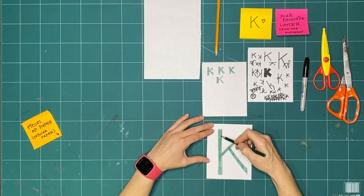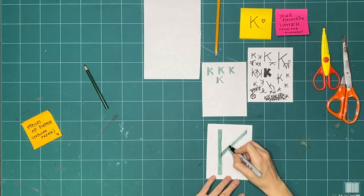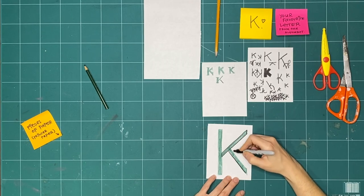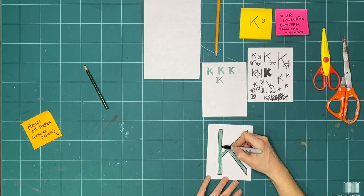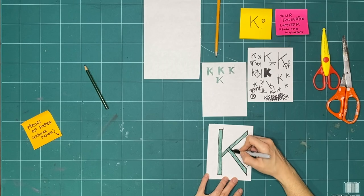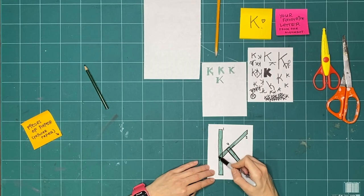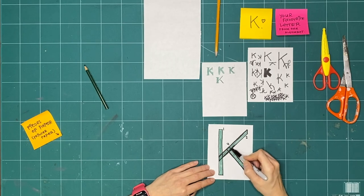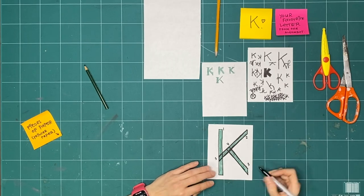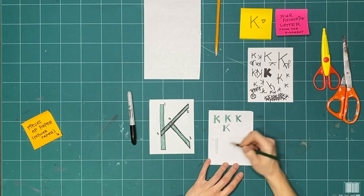Now go back to your big letter. Look at all the shapes that make up your letter. How many shapes can you find in your letter? Mark them on top of your letter. Can you draw them separately on another page?